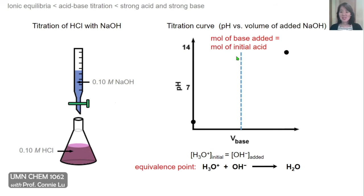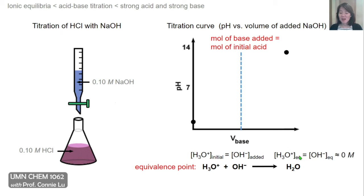Between these two extremes, somewhere in the middle is the equivalence point, where the moles of base added just equal the moles of acid initially present. The concentration of acid equals the concentration of hydroxide added, and because these are equal, they annihilate each other to form water. After neutralization, the concentration of acid and hydroxide is essentially zero, and we only have water, such that the pH at the equivalence point is 7.